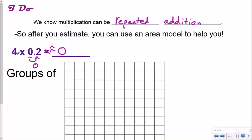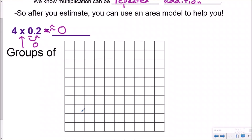Trying to figure out what is four groups of — because this is one way you can interpret the multiplication sign. I want four groups of two-tenths. So I see that my grid, my area model, is really not for tenths — it's for hundredths. But I know that two-tenths is equal to twenty-hundredths. So I want four groups of two-tenths. Here's my first group of two-tenths — these two right here. That's twenty-hundredths.